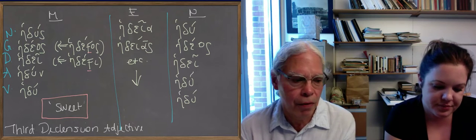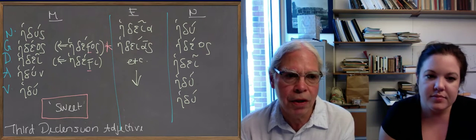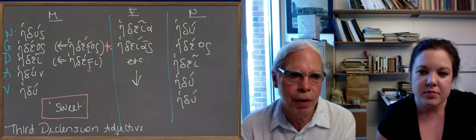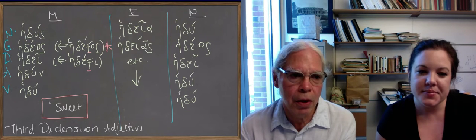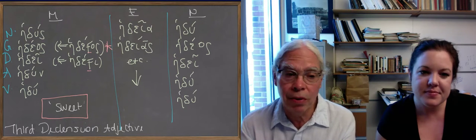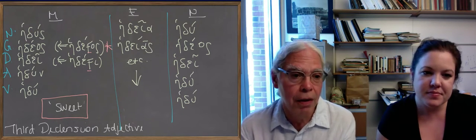What happens is you get a thematized stem in the genitive and the dative that you see throughout this word. So instead of being hedus, it becomes hedawos and hedawi, and when the w disappears you get hedaos and heday.